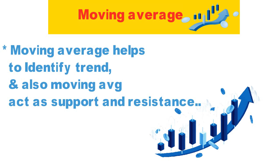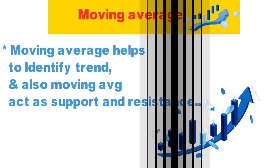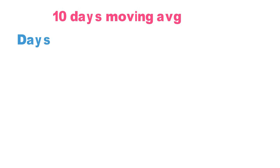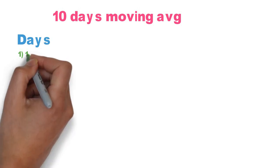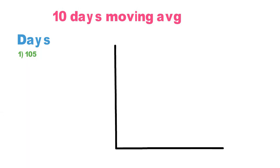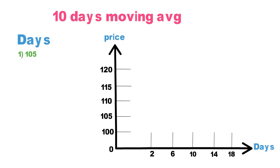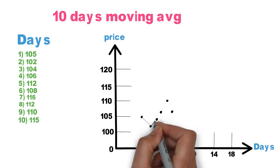Let's see how moving average calculations are done. For example, if I need a 10-day moving average, let's see how it is plotted on a chart. Assume day number one: price closes at 105. I will mark it on the chart. The x-axis indicates price and the y-axis indicates days. On day 2, price closes at 102, then 104, then 106, and so on.